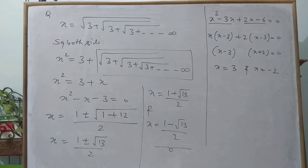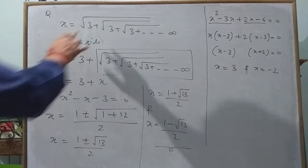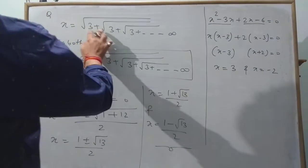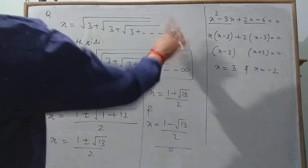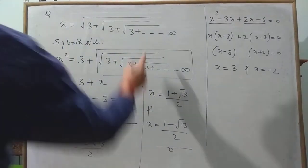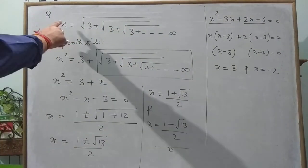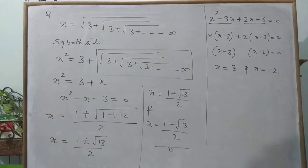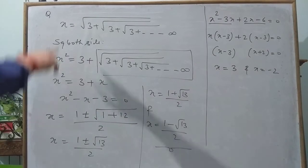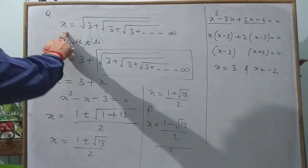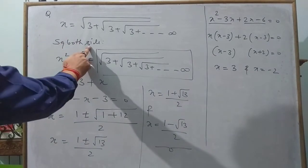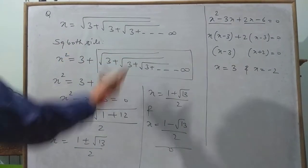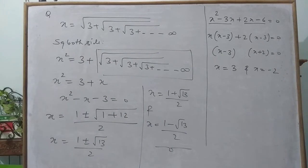This is the second type of question — when some equation is running till infinity. If it is given equal to x, that's fine. If not, we first set it equal to x, then square both sides and simplify. This is the second type of problem.